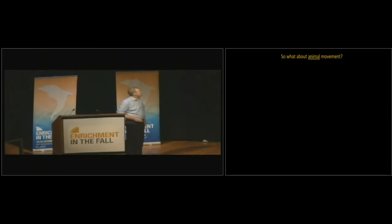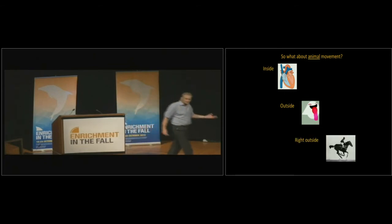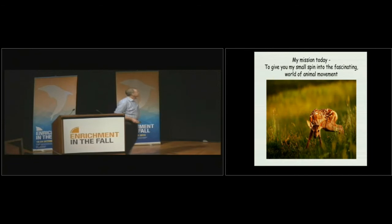So what about animal movement? I'm going to talk about lots of different types of movement. There's movement inside us. Our hearts are beating. There's outside movement. So I'm moving and I'm not actually going anywhere. And of course, there's translocational movement, actually going somewhere. So think about all the different types of movement that go on in normal living systems. And my mission today is to give you my small spin, my ideas, some of my stuff on into the fascinating world of animal movement. So let's do it.